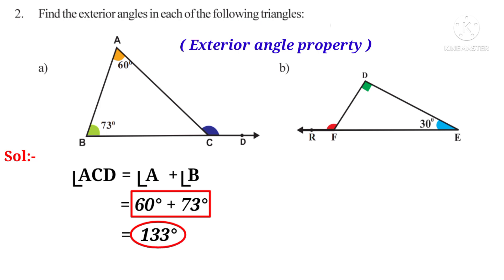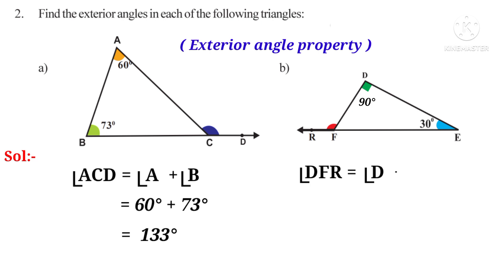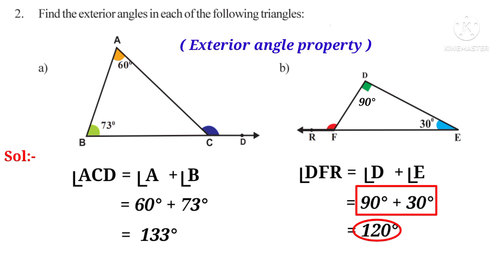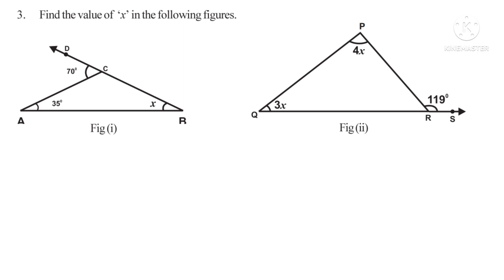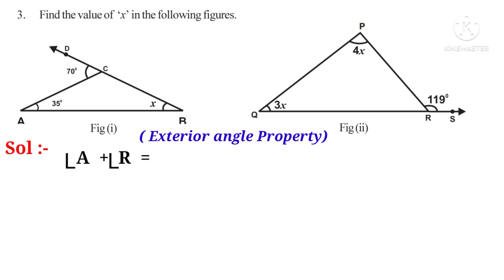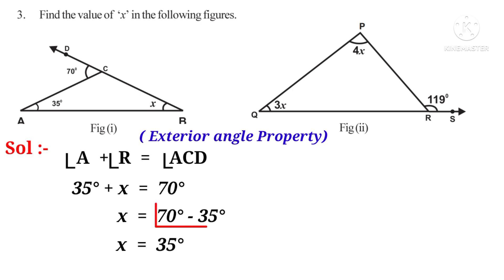In the second figure, angle D is marked with a square, showing 90 degrees. Using the exterior angle property, exterior angle DFR equals angle D plus angle E, which is 90 degrees plus 30 degrees, giving 120 degrees. Third problem: find the value of X in the following figures. In the first figure, angle A plus angle R equals exterior angle ACD. So, 35 degrees plus X equals 70 degrees, because angle A is 35 degrees and angle ACD is 70 degrees. Therefore, X equals 70 minus 35 degrees, so X equals 35 degrees.